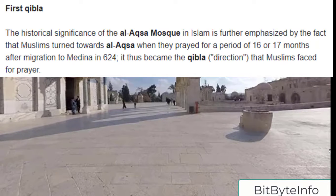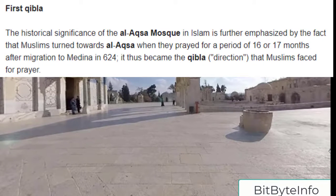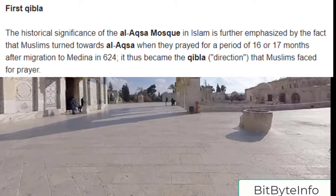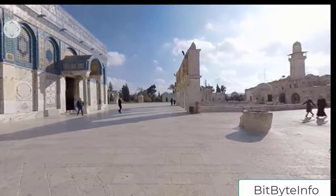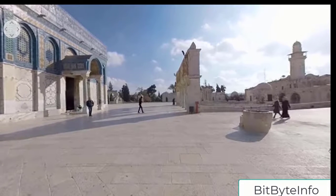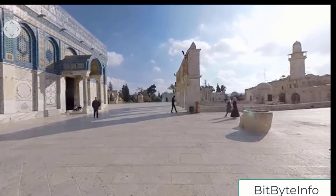Abdul Malik bin Marwan built the Dome of the Rock in Jerusalem, where there is also a Jewish presence. Masjid Al-Aqsa is basically divided into three regions — one for Christians, one for Jews (Yehudi), and one area that represents the outer view for others.